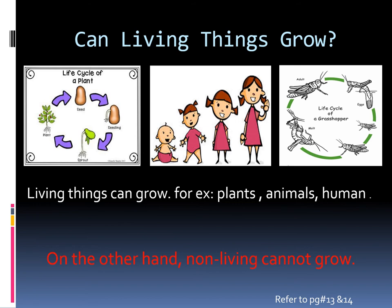Now the next question is: can living things grow? Three examples are given. The first is the life cycle of a plant — it grows from a seed. The second is a child growing from a baby to an adult. The third is an insect — a grasshopper — which is also growing. These three examples show that living things can grow.